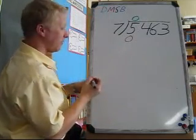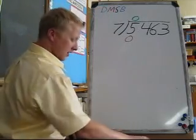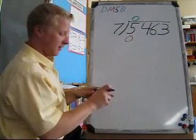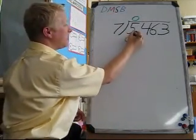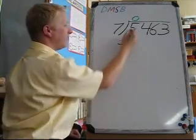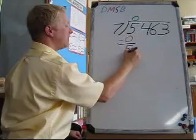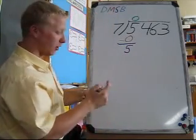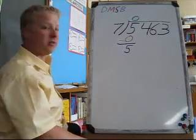My next step is S, subtract. And I'm going to subtract 5 minus 0. 5 take away 0 is 5. And that's been written in purple because the S I wrote in purple, just to help you understand what I'm doing.